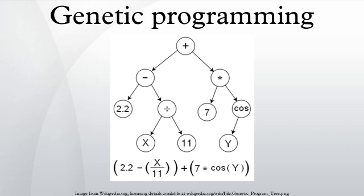Program representation: GP evolves computer programs, traditionally represented in memory as tree structures. Trees can be easily evaluated in a recursive manner. Every tree node has an operator function and every terminal node has an operand, making mathematical expressions easy to evolve and evaluate. Thus traditionally GP favors the use of programming languages that naturally embody tree structures.